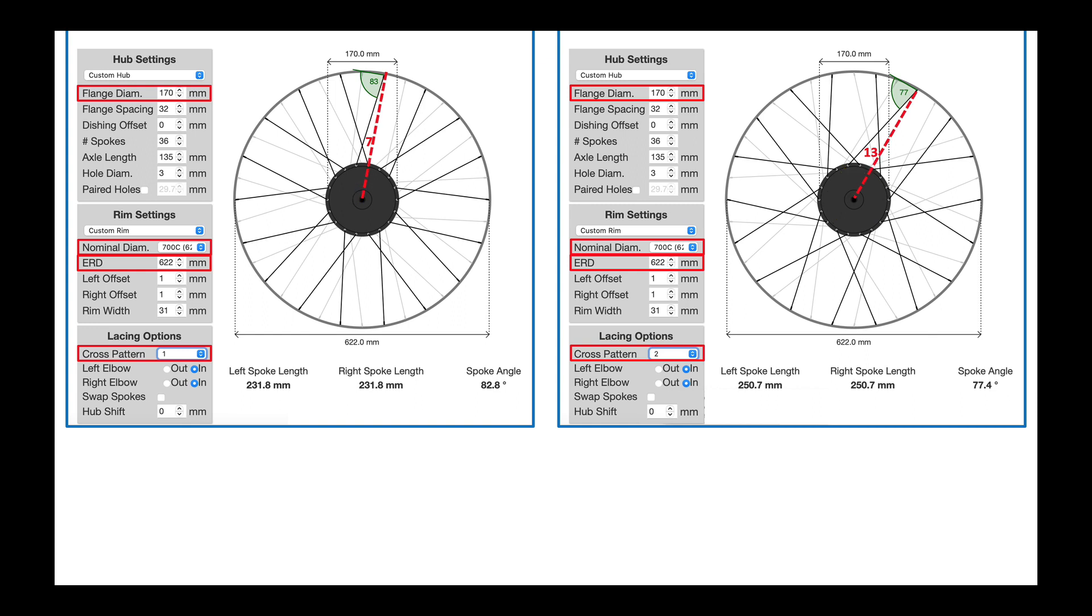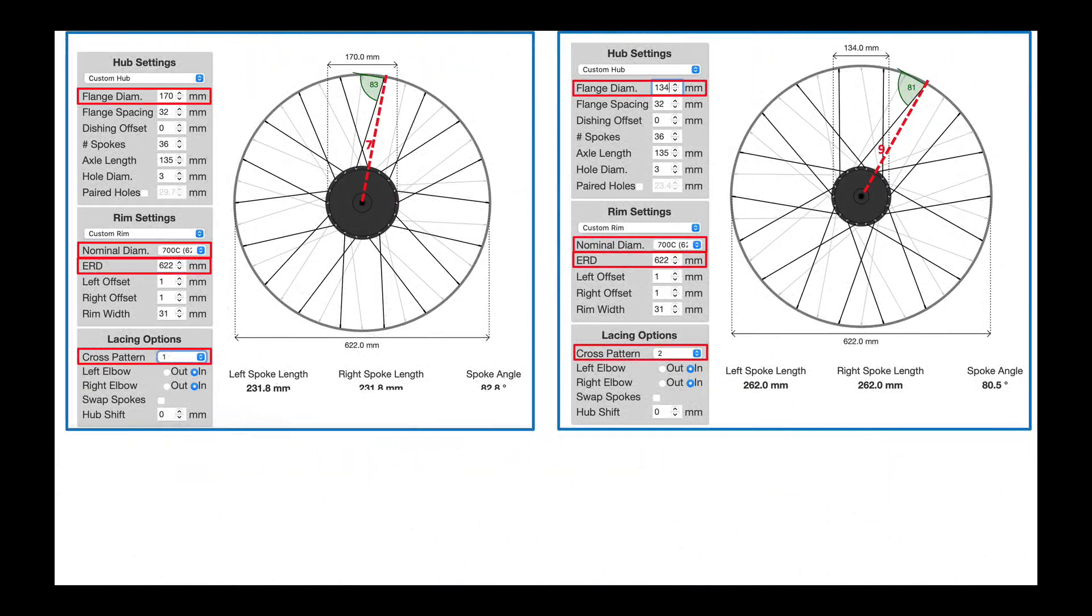Now, let's ask this question. How much smaller must my hub flange be to get the two cross articulation angle to less than 10 degrees? We go from this to this. So my flange diameter for that to happen can be no more than 134 millimeters.